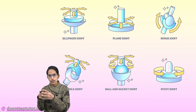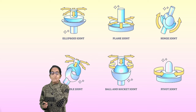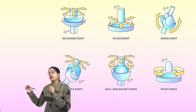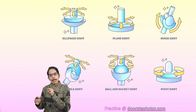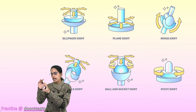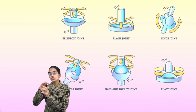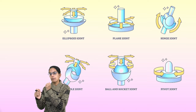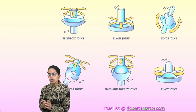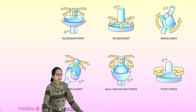Moving on to joints: a joint is where two or more bones come together. These bones are held together by ligaments, which connect bone to bone. A connection of bone to muscle is called a tendon, and a connection of muscle to muscle is known as fascia. At the end of each bone there is a soft cartilage that cushions the bone and prevents friction.